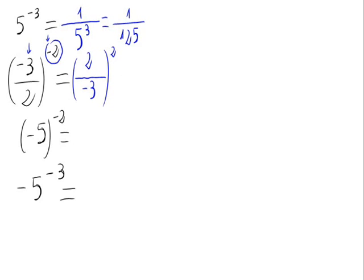This fraction squared is the same as the numerator squared and the denominator squared. That is, 2 squared, 4, divided by minus 3 squared. The minus sign goes away, and it is 9. The final result is 4 divided by 9.